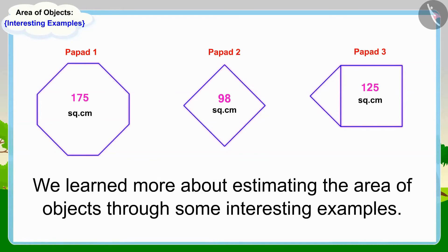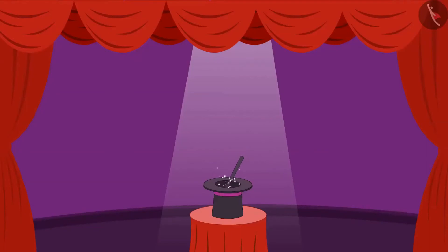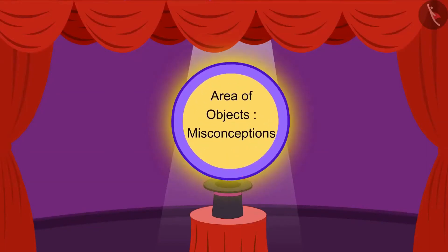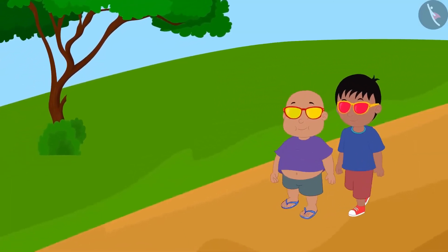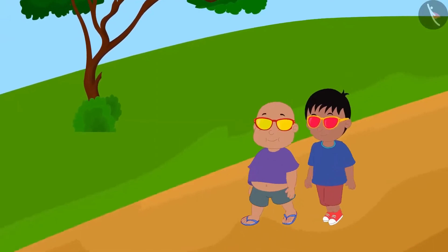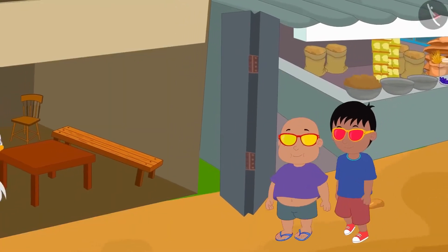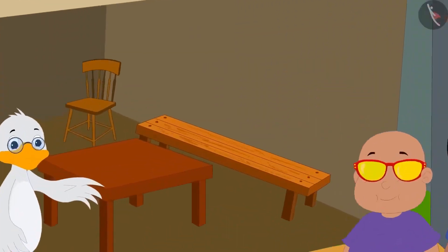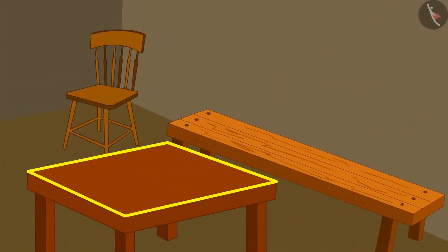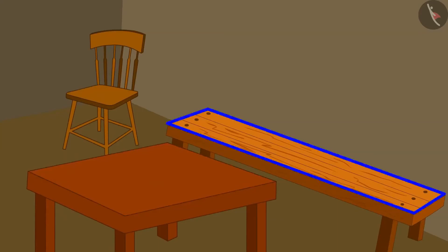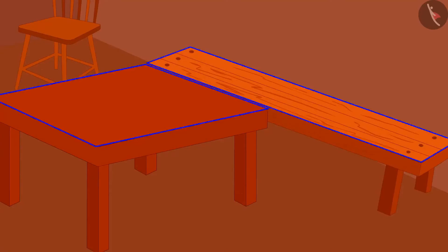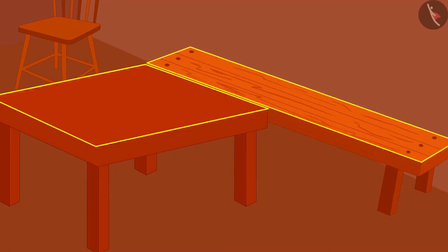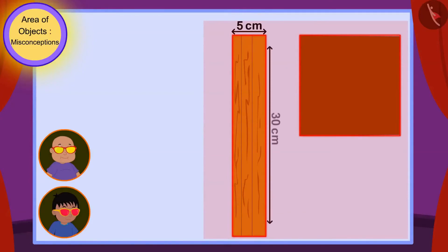In this video, we will look at some of the misconceptions related to this. Raju and Babalu are out on a walk again today wearing their unique glasses. While wandering, they reached Uncle's table shop. Uncle's shop has a square-shaped table and a rectangle-shaped table.